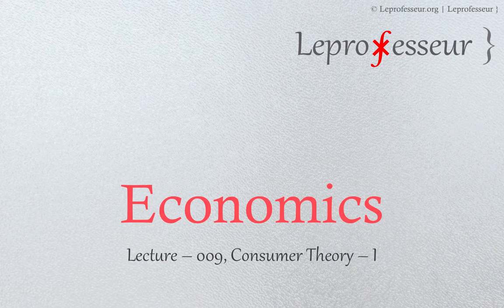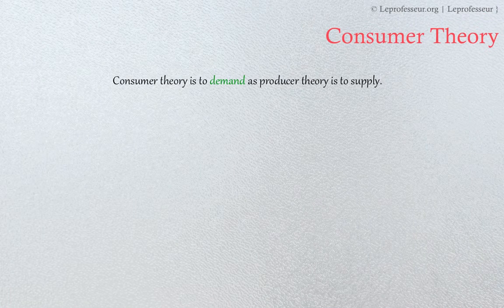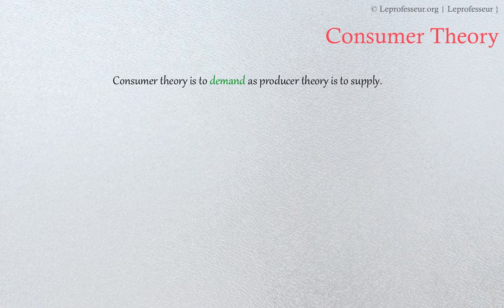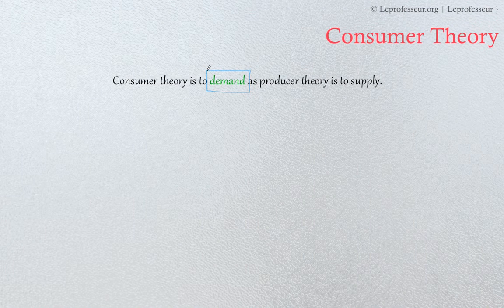Hello everyone, hope you guys are doing well. In the previous lectures we were discussing about producer theory. In this lecture we're going to be discussing about consumer theory. As we discussed, producer theory is related to suppliers, entrepreneurs, or businesses — essentially those providing goods and services — so it is related to supply. Consumer theory, on the other hand, is related to demand.